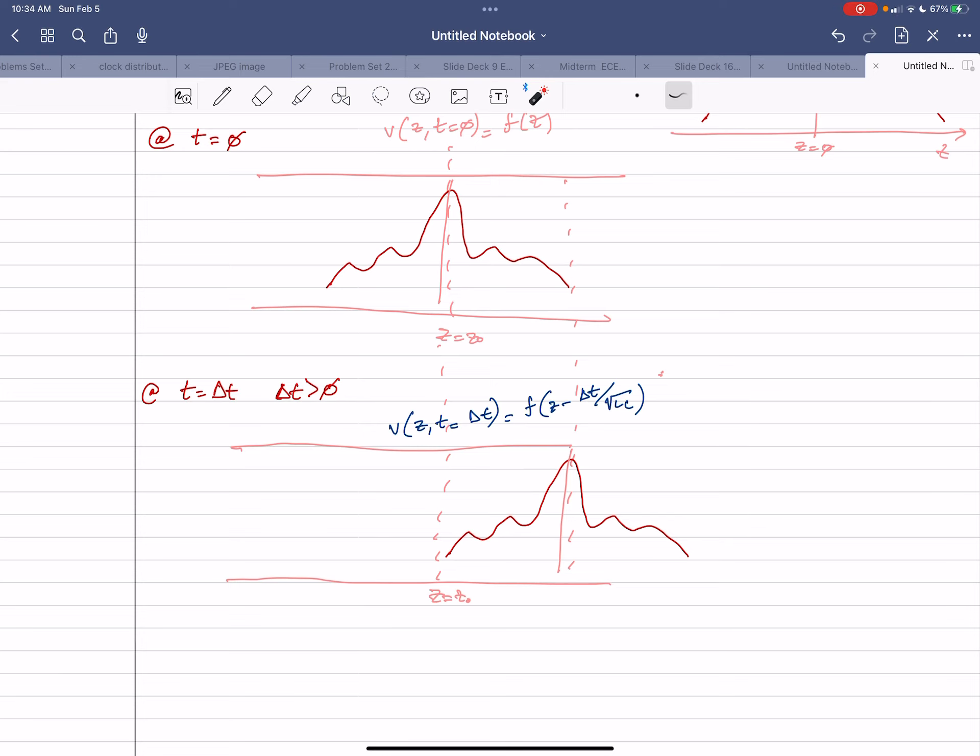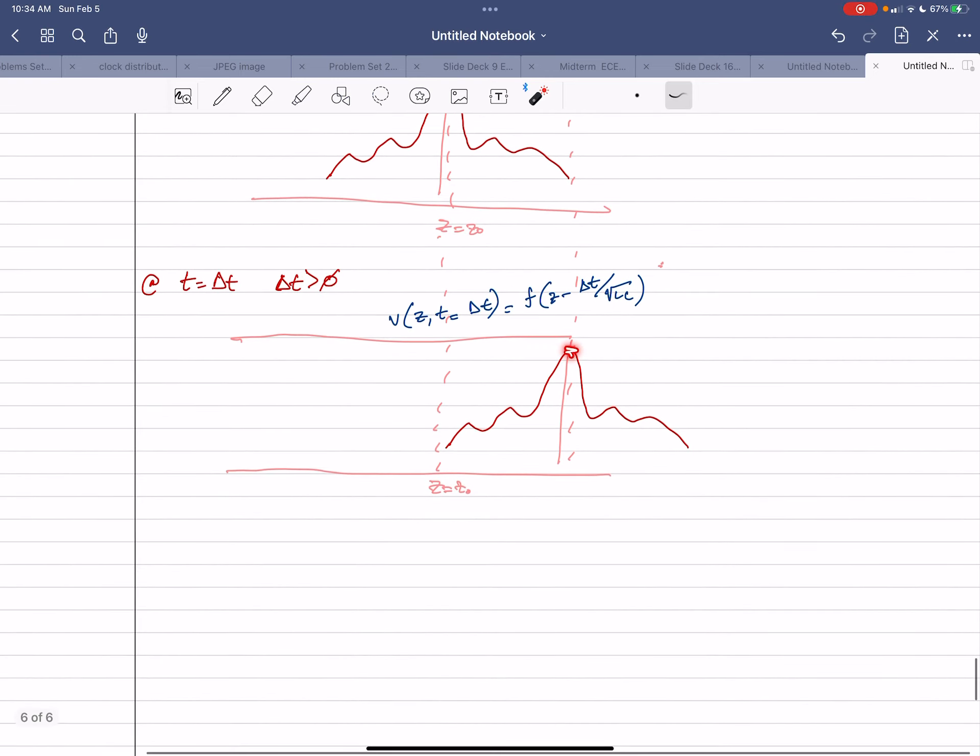This means the waveforms move to the right, and the new maximum value has moved to z is delta t over square root of LC. So delta t over square root of LC has units of distance.